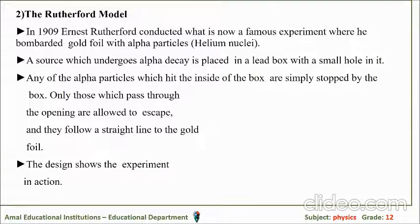Rutherford's model: in 1909, Ernest Rutherford conducted his now famous experiment where he bombarded a gold foil — which is quite malleable — with alpha particles, which are helium nuclei. A source undergoing alpha decay is placed in a lead box with a small hole. Alpha particles hitting the inside of the box are stopped; only those passing through the opening escape and follow a straight line. These are energetic, positively charged particles.